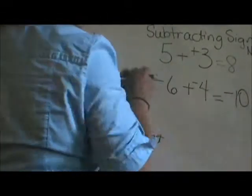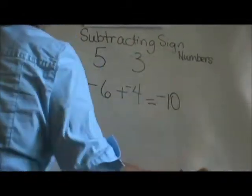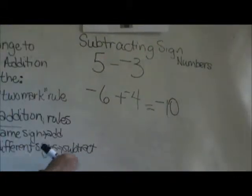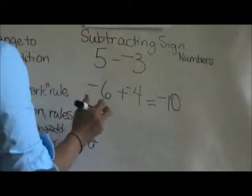Now, let's go back and do these in slow-mo. This is what I call the 2 mark rule. When you have subtraction, after the first integer, I am going to make 2 marks.